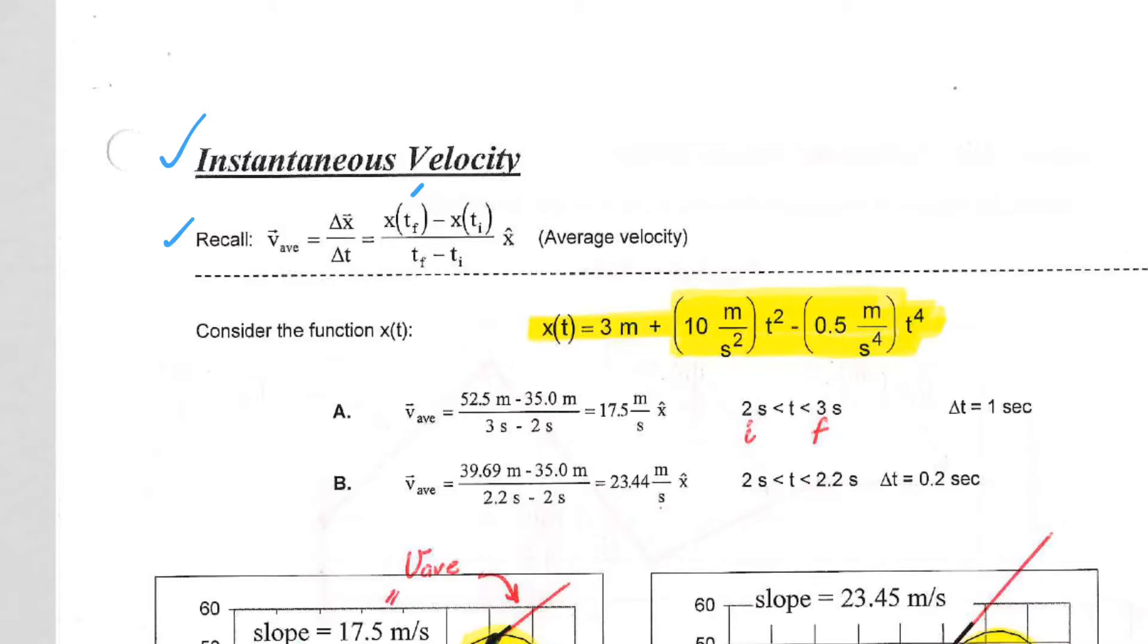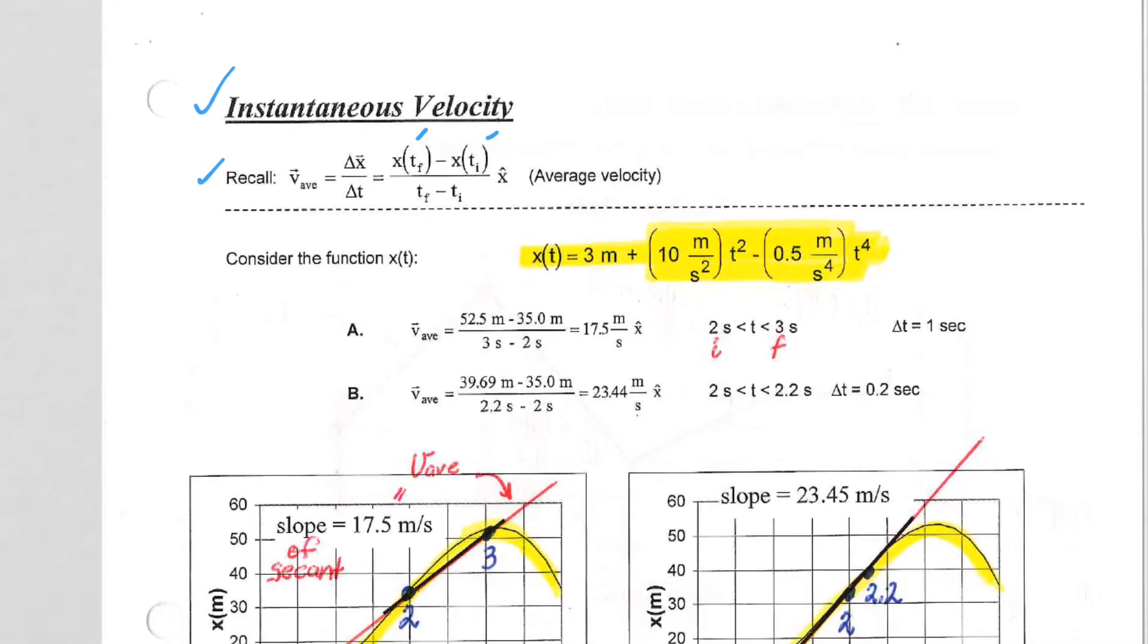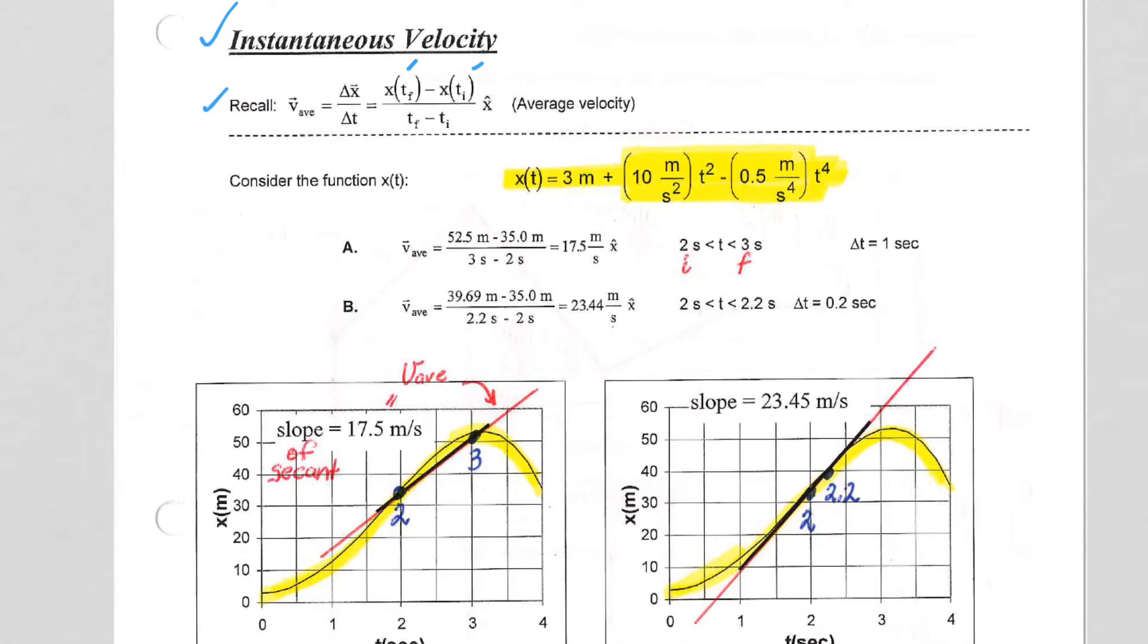Average velocity is x-final minus x-initial divided by t-final minus t-initial. And to illustrate the point, I've picked a random function x(t): 3 plus 10t squared minus 0.5t to the fourth.